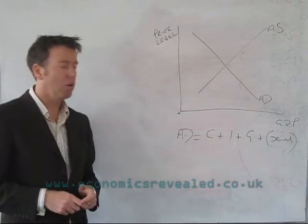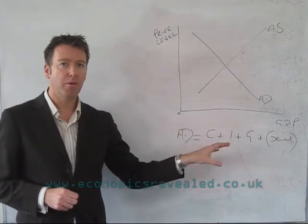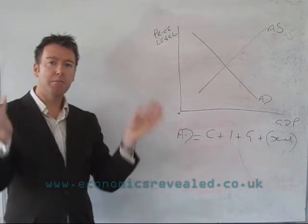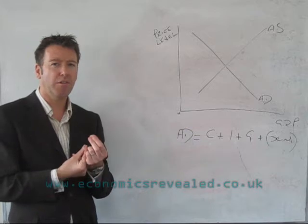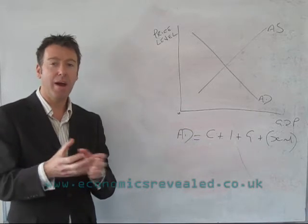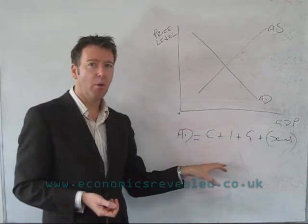Now aggregate demand in the economy is made up of a number of components. It's all of the demand in the economy and we split it into these separate components just for ease of understanding where the demand comes from. So we've got this very simple equation.